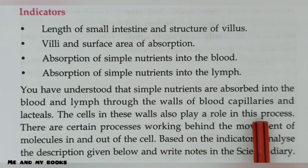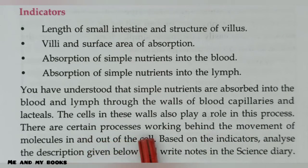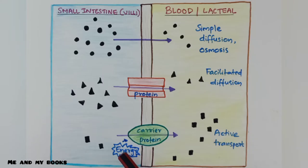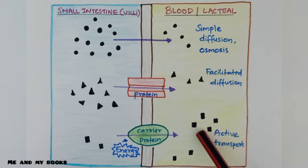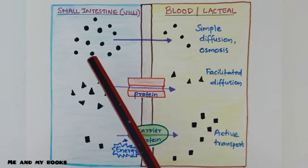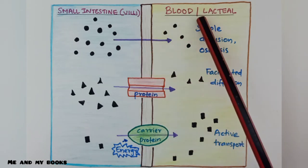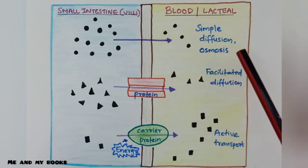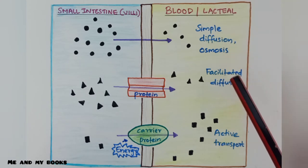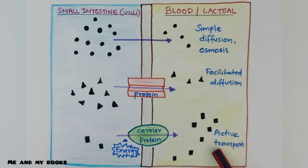There are certain processes working behind the movement of molecules in and out of the cell. Absorption takes place from the small intestine into the blood or lacteal. Here is the diagram used for absorption methods — this represents the small intestine or villi, and this one is blood or lacteal. The types of absorption are: simple diffusion, osmosis, facilitated diffusion, and active transport.